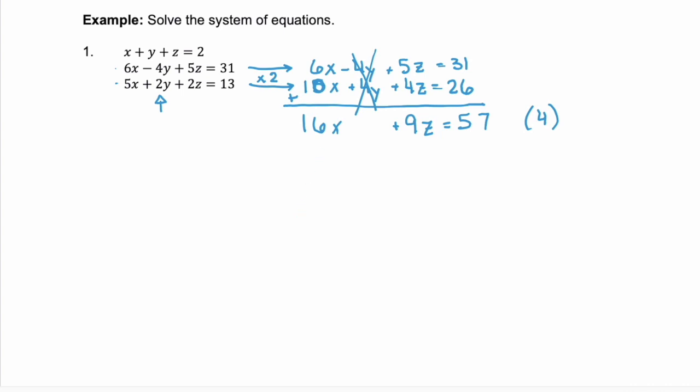Now let's look at equations one and three. Again, we can alter these so that we can eliminate the y. So equation one, let's multiply by negative two. That'll give us -2x - 2y - 2z = -4. And we'll leave equation three alone because it has a positive 2y: 5x + 2y + 2z = 13.